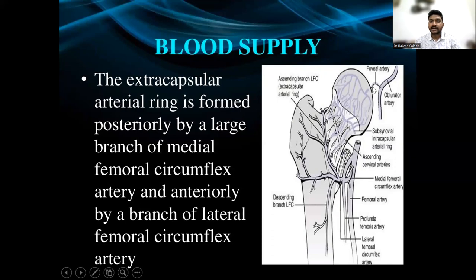The foveolar artery is a branch of the obturator artery. The extracapsular arterial ring is formed posteriorly by a large branch of the medial circumflex femoral artery and anteriorly by a branch of the lateral femoral circumflex artery and a branch of the femoral artery.